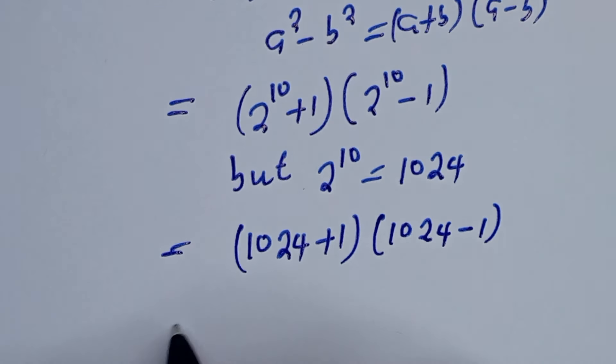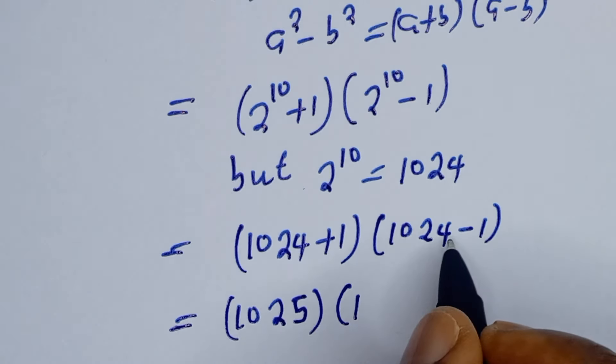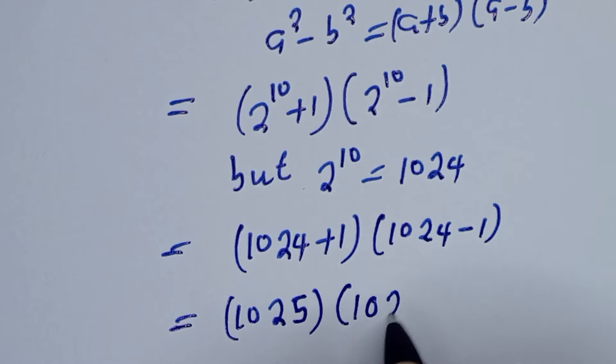Now, 1024 plus 1, this is 1025 times 1024 minus 1, this is 1023.